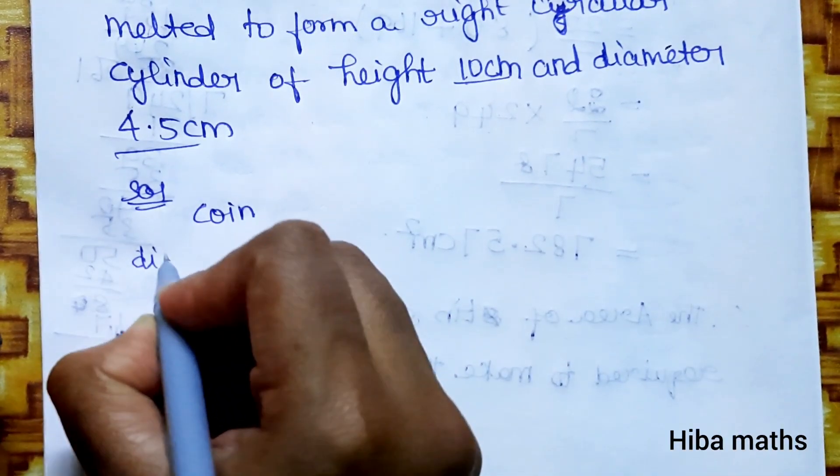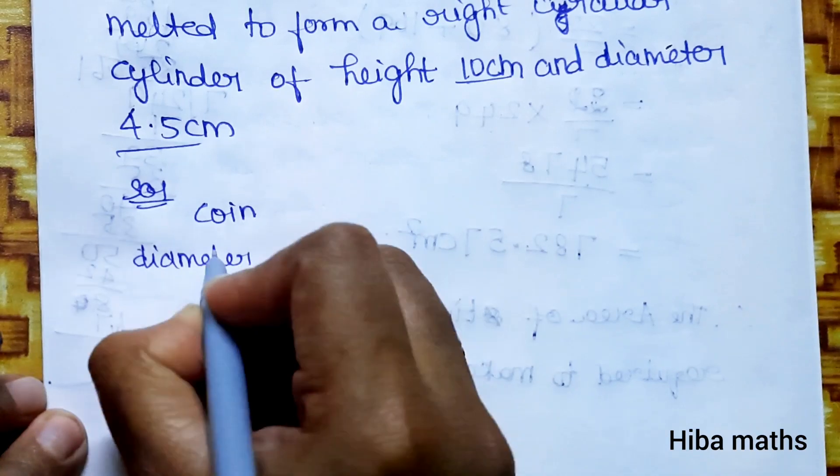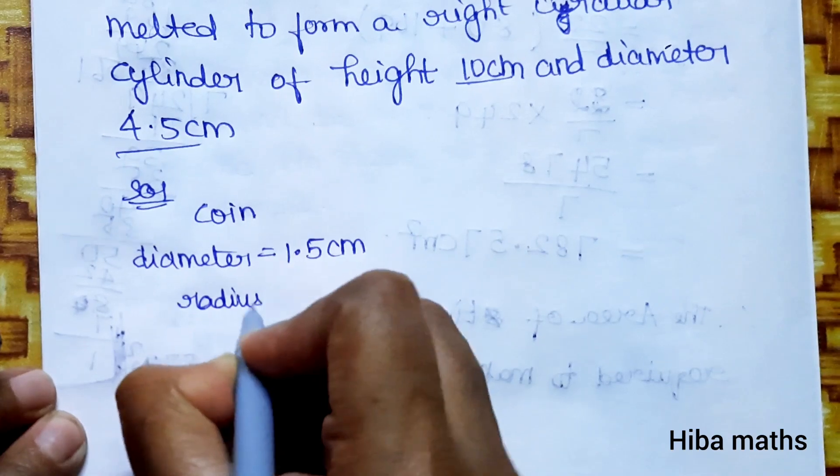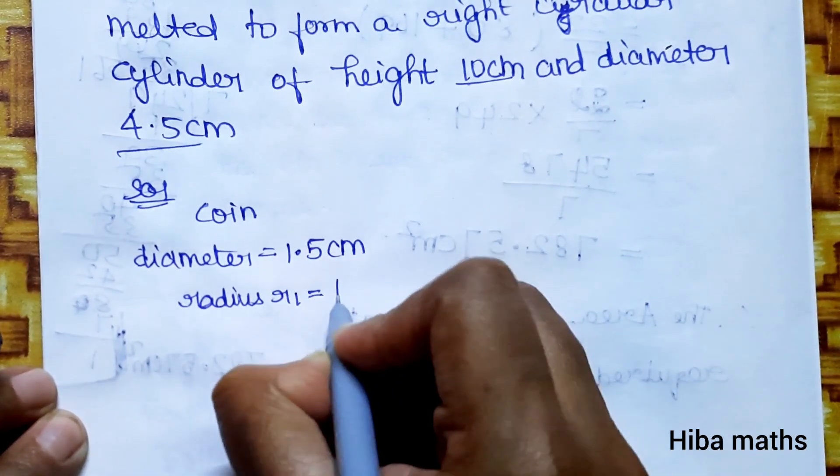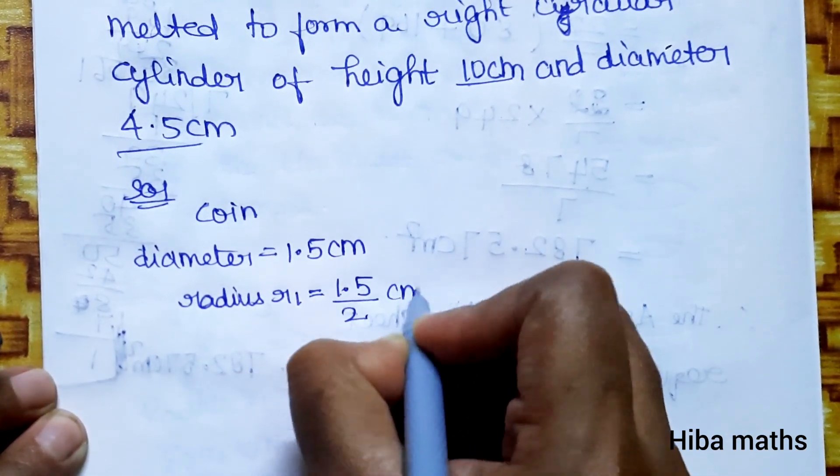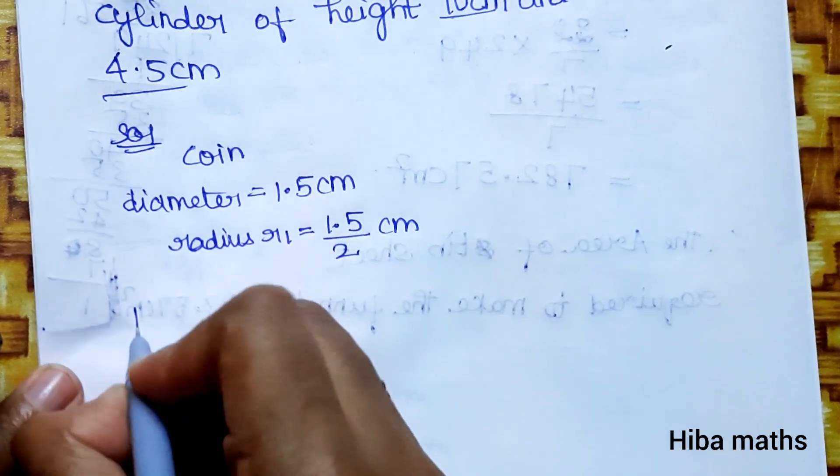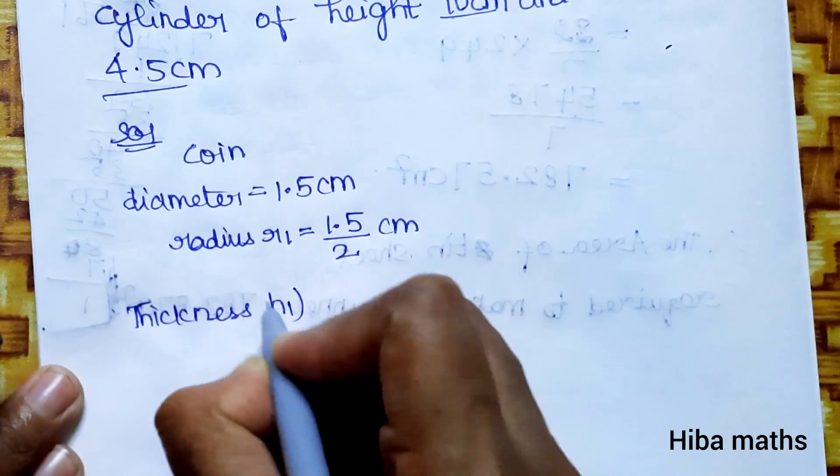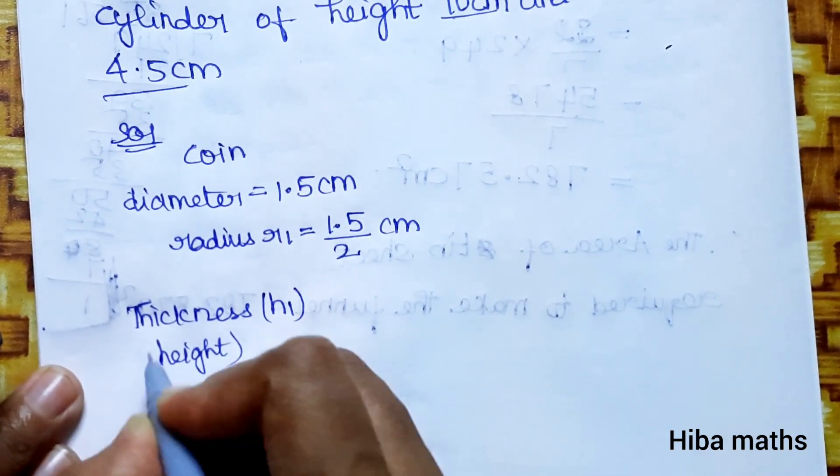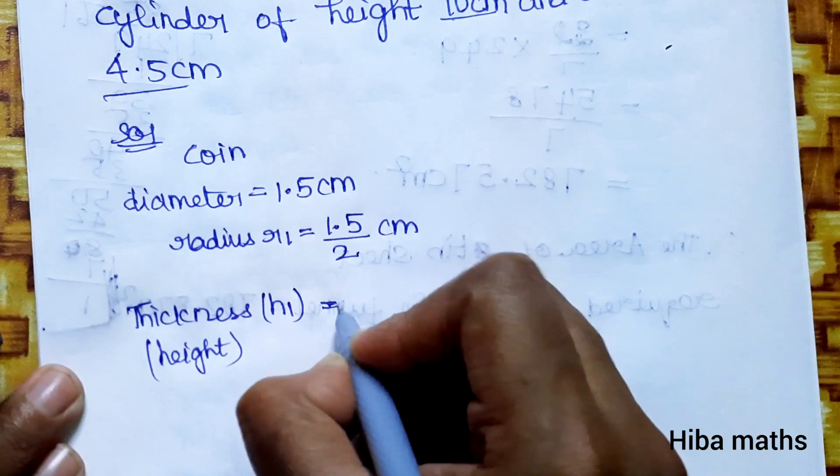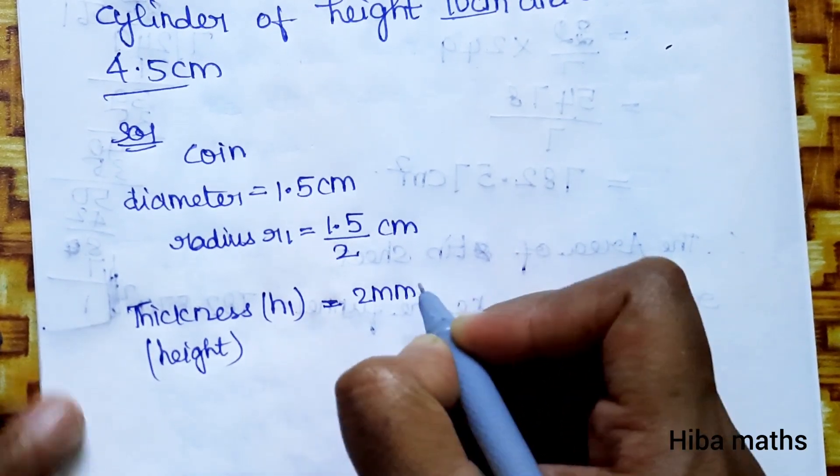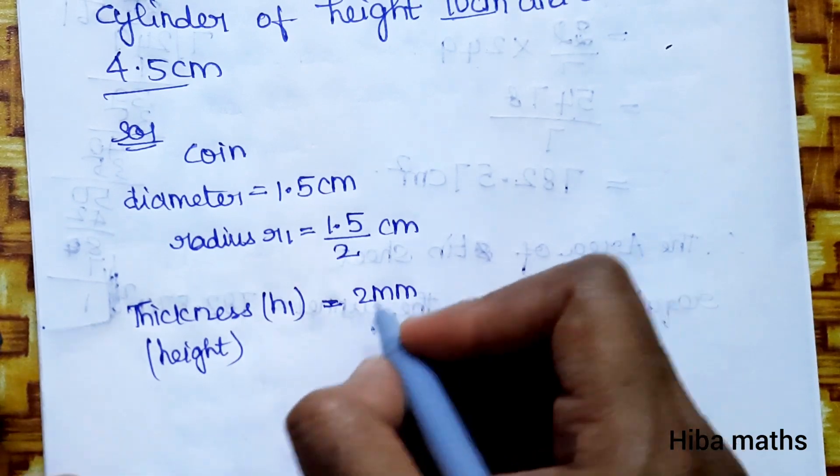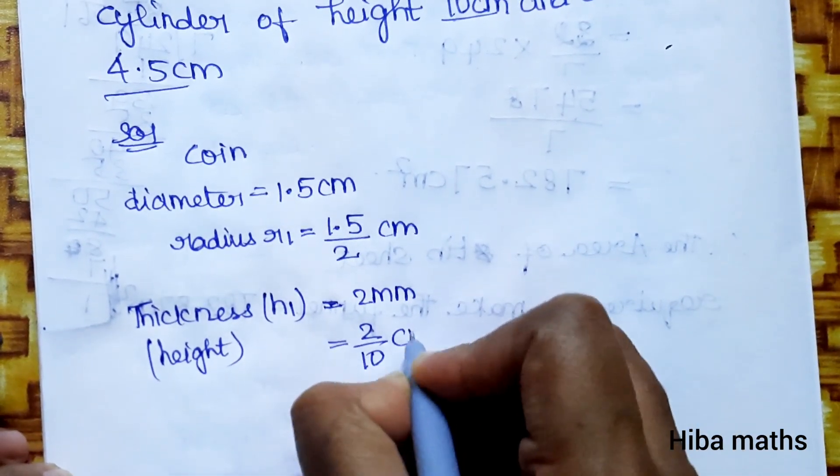For the coin, diameter is 1.5 cm, so radius r1 is 1.5 divided by 2 cm. Height is thickness, h1 is 2 mm. To convert mm to centimeter, divide by 10, so 2 by 10 cm.